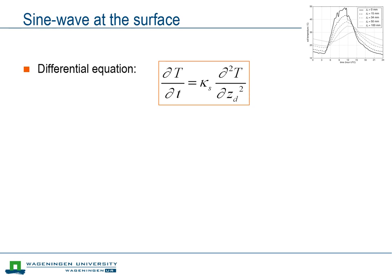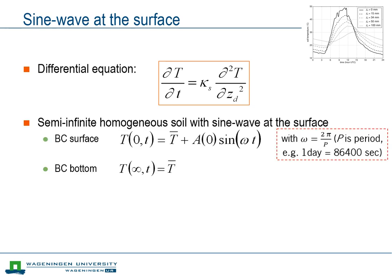Here we assume a sinusoidal variation of the surface temperature. Although not exact, it is a reasonable approximation to what happens on the diurnal timescale or on the yearly timescale. This imposed temperature varies around the mean temperature T̄. The amplitude is A(0), which is the amplitude at the surface. The temporal variation of the sine wave is dictated by the frequency ω. Depending on the period of the variation we are looking at, this omega can have different values.